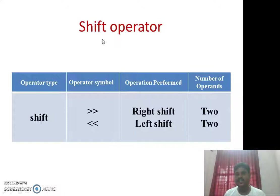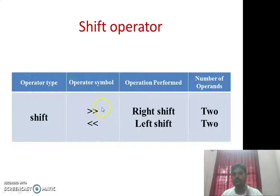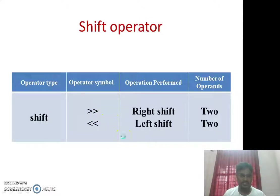For shift operators, you can do a right shift or left shift. Double greater-than (>>) performs a right shift and double less-than (<<) performs a left shift. You specify the number of bit positions to shift — if you give 1 it shifts by one position, if you give 3 it shifts by three bit positions.